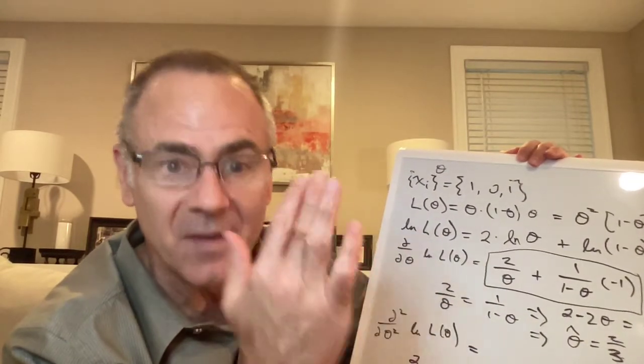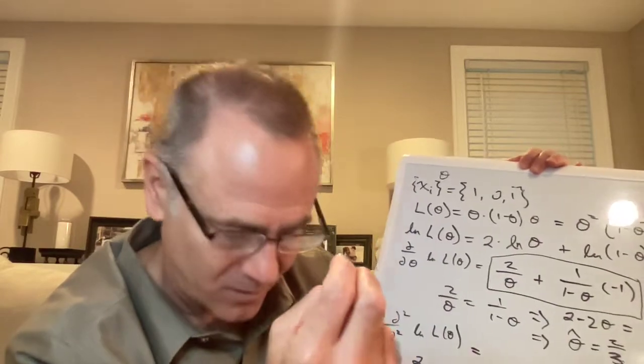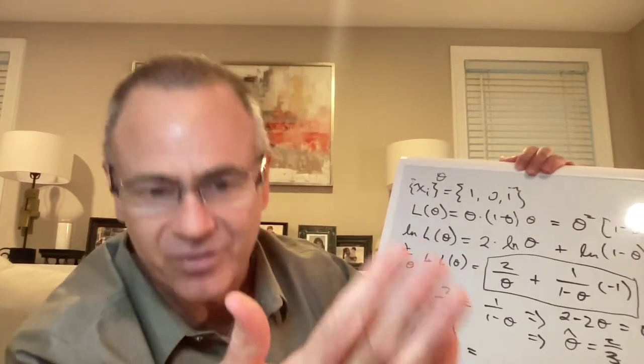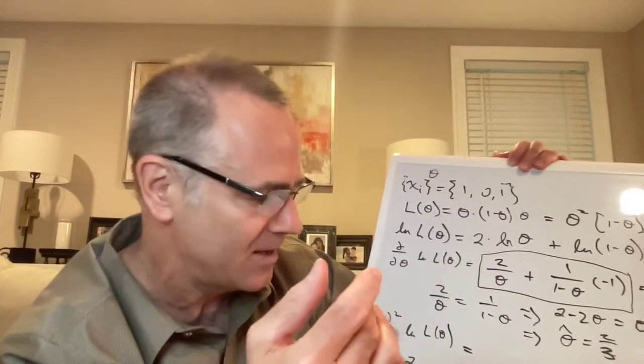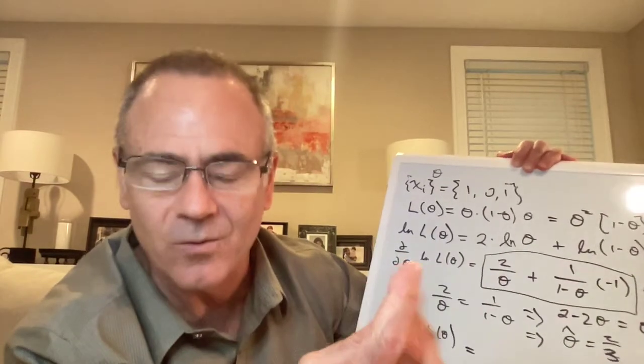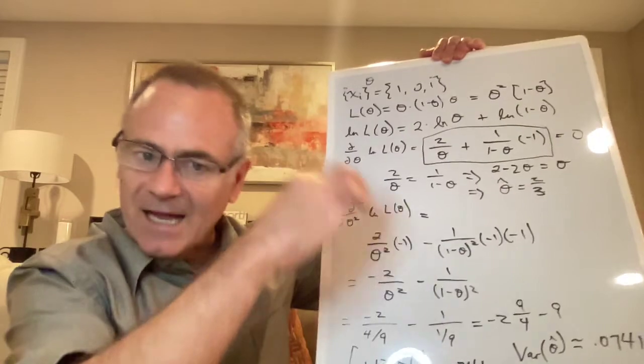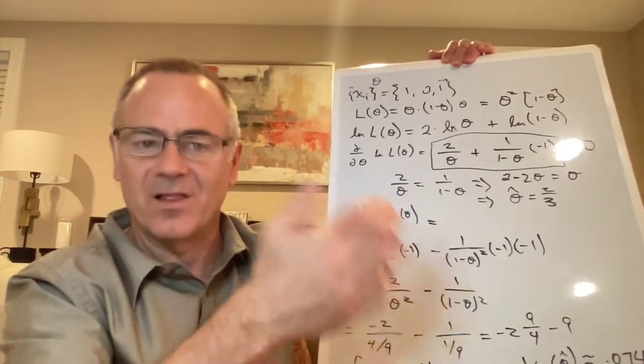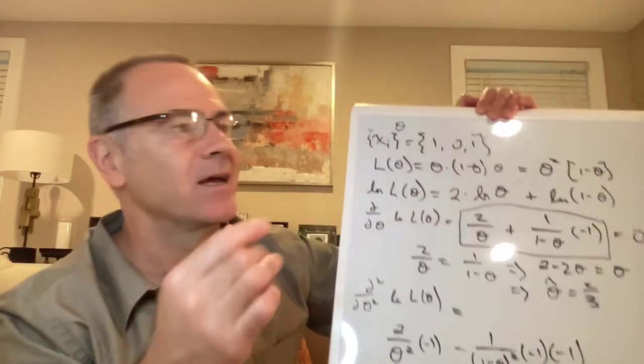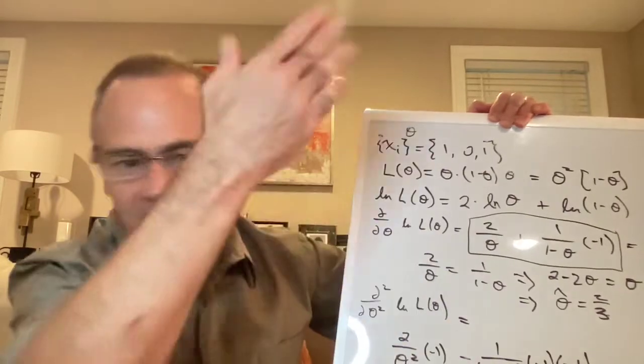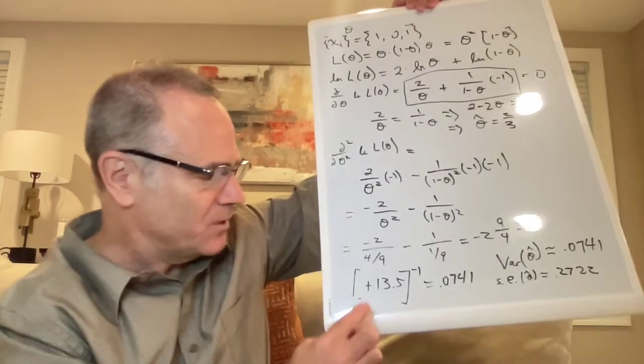With mean equal to the truth, the true value of theta, and variance equal to the second derivative of the log likelihood, actually, the negative of it, and then you take the inverse of that. So that's what we did.